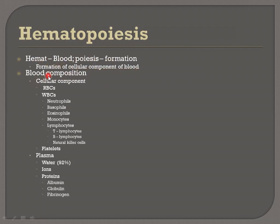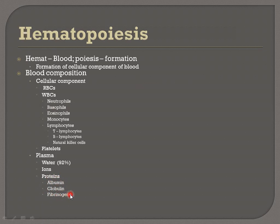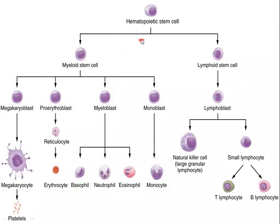Blood is basically formed by two components: the cellular component and plasma. In the cellular component we have RBCs, WBCs, and platelets. The different types of WBCs include neutrophils, basophils, eosinophils, monocytes, and lymphocytes, which are subdivided into T lymphocytes, B lymphocytes, and natural killer cells. Plasma is made up of 92% water and contains proteins, mainly albumin, globulin, and fibrinogen.